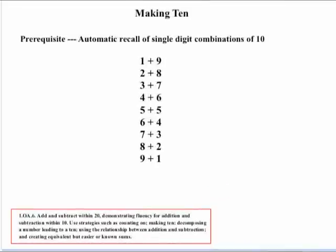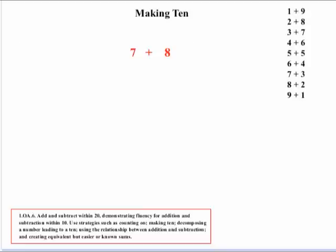The second strategy is making 10. For this strategy, it is really important that kids have automatic recall of all the single-digit combinations for 10, such as 1 plus 9 is 10, 2 plus 8 is 10, 3 plus 7 is 10, and so forth. You want kids to really have this knowledge solid before trying an example for making 10.